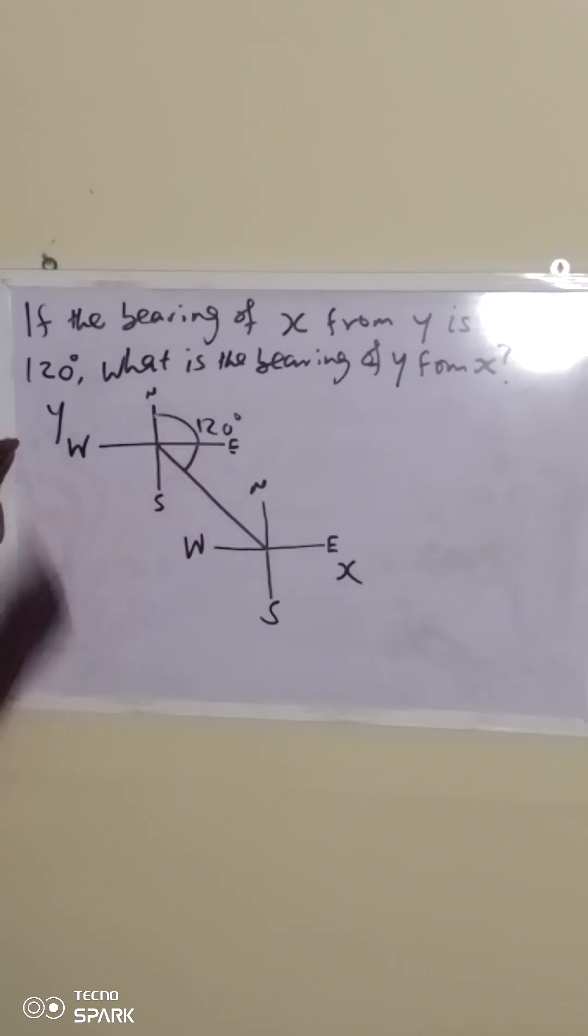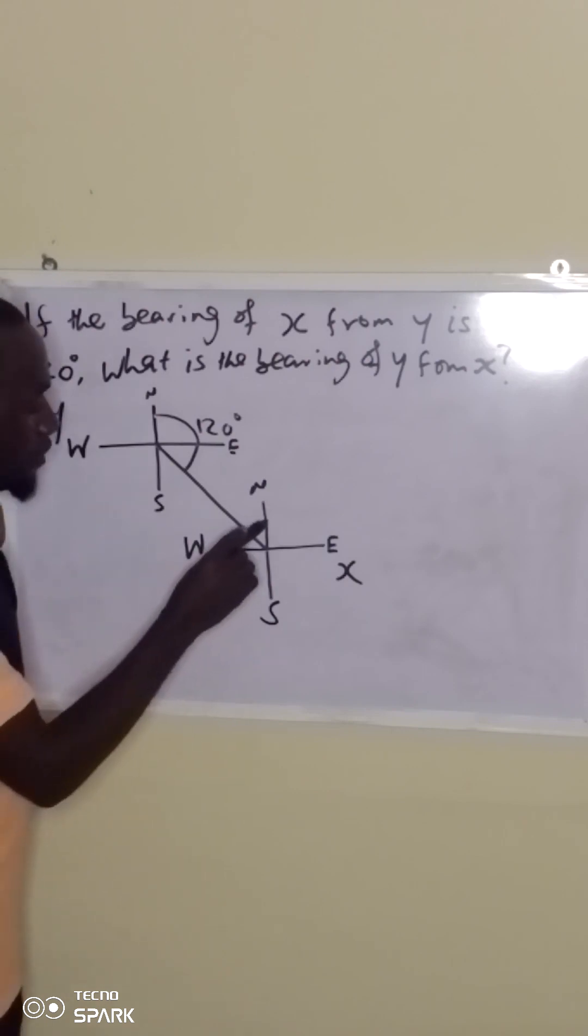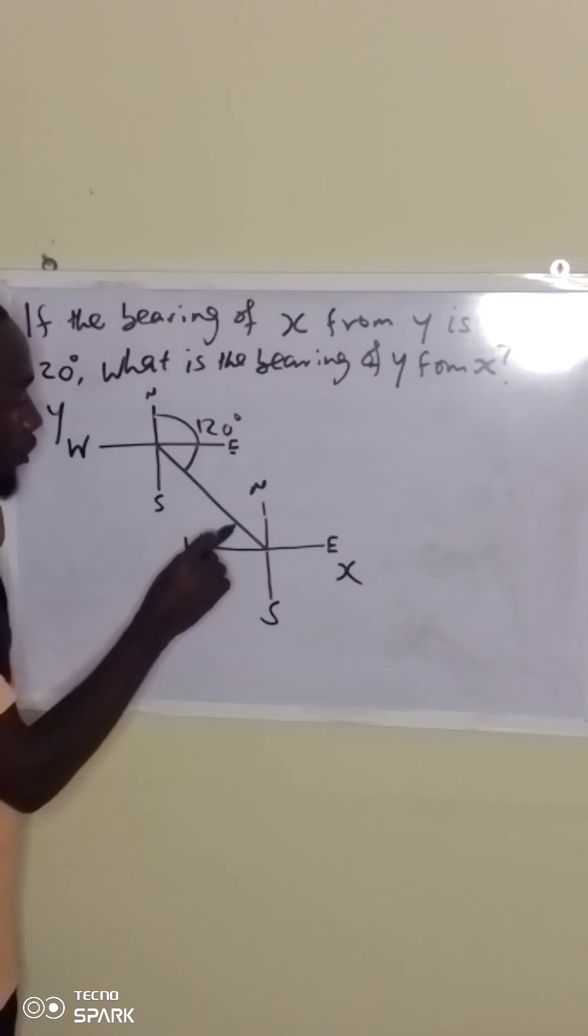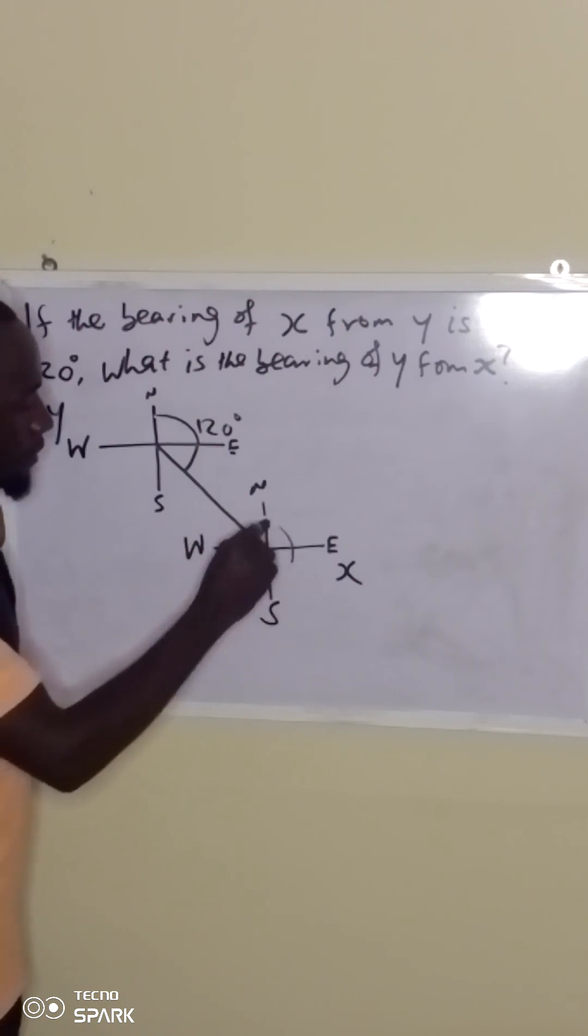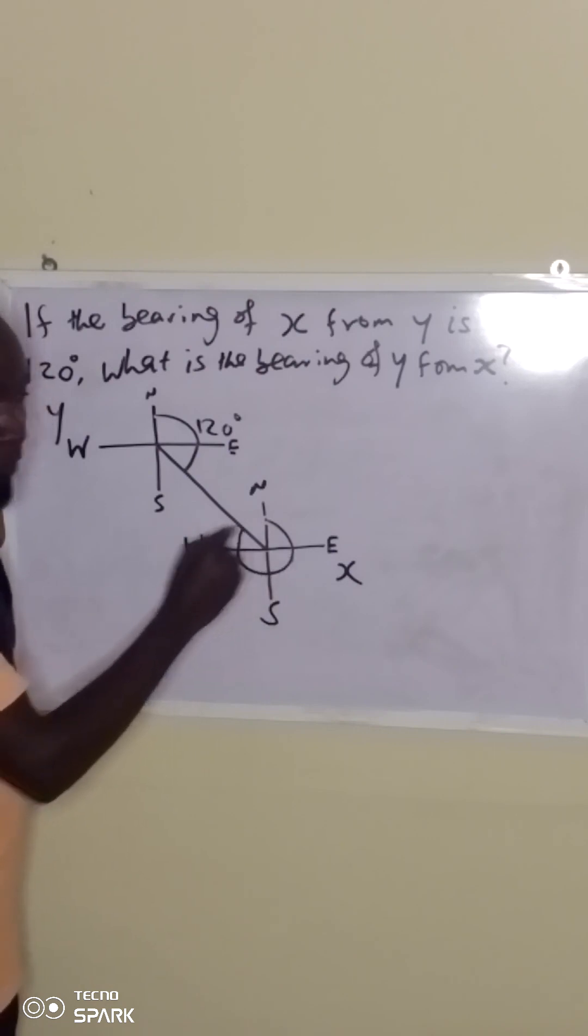That means from the north to this point is 120. Now, what is the bearing of y from x? That means we are talking about the angle from the north in clockwise direction to the line joining between x and y. That means this angle from this point up to this point.